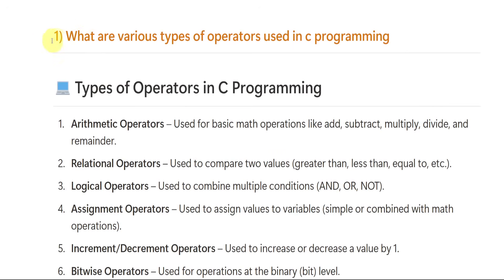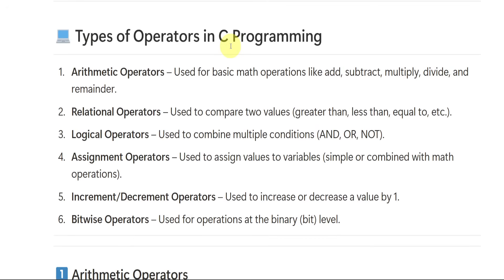The first important question in unit number 1 is: what are the various types of operators used in C programming? I think you all are aware of operators — already in semester 1 you have read about operators. Those operators are also given in C programming. You just need to understand them better so that if they ask you in the examination, you should be able to write. Let us see.